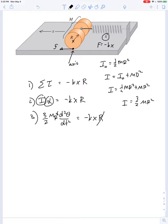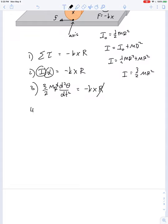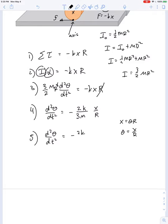So we can cancel out one of the r's and then cross multiply. We have d2 theta dt squared is equal to negative 2k divided by 3m times x over r. If it rolls without slipping, then x is equal to theta r, or in other words, theta is x over r. So here we go. Second derivative of angular position with respect to time is equal to negative 2k over 3m theta. And you know how this goes.